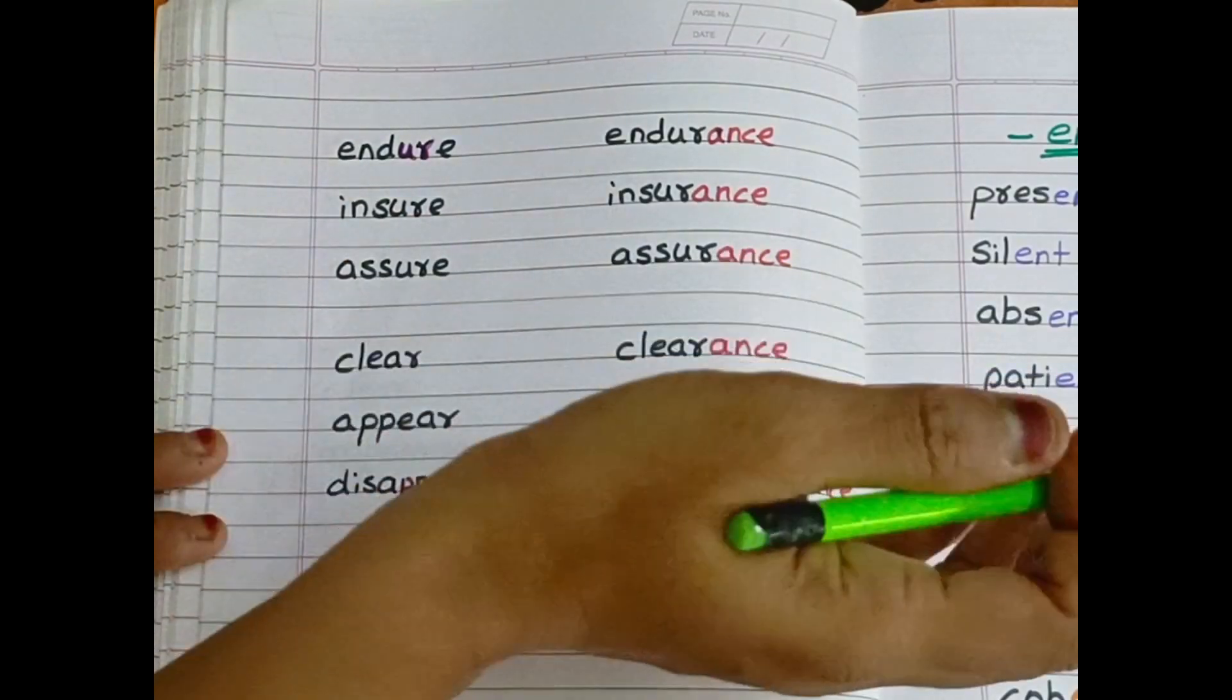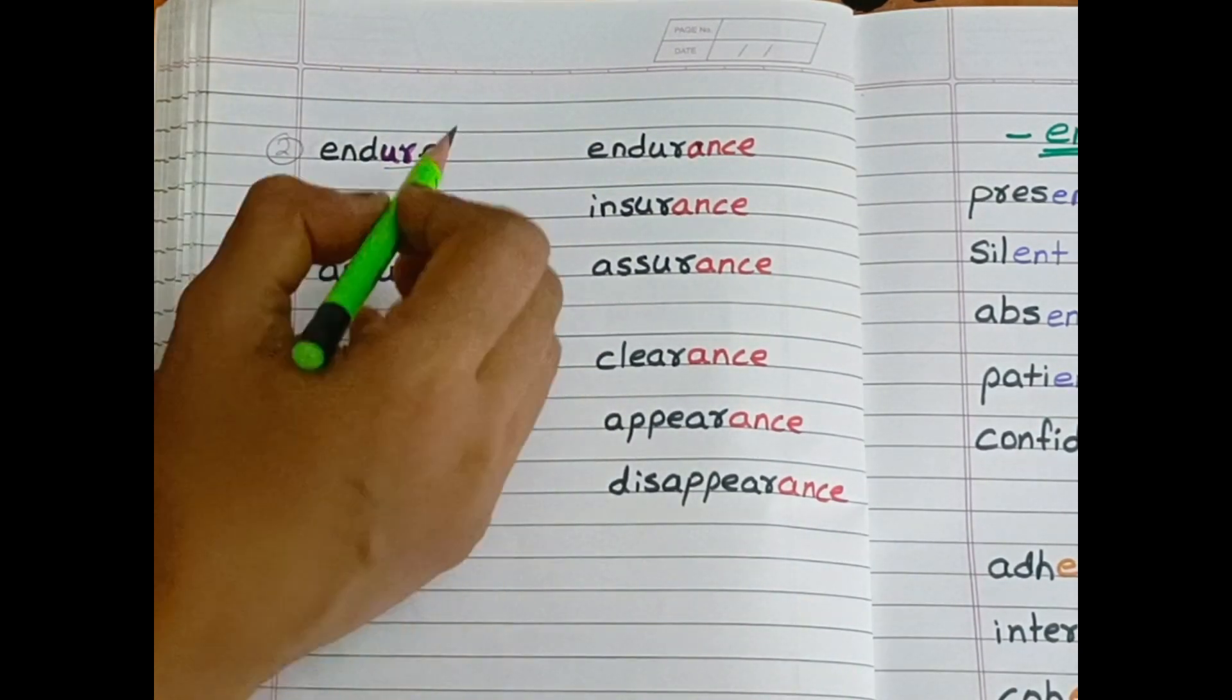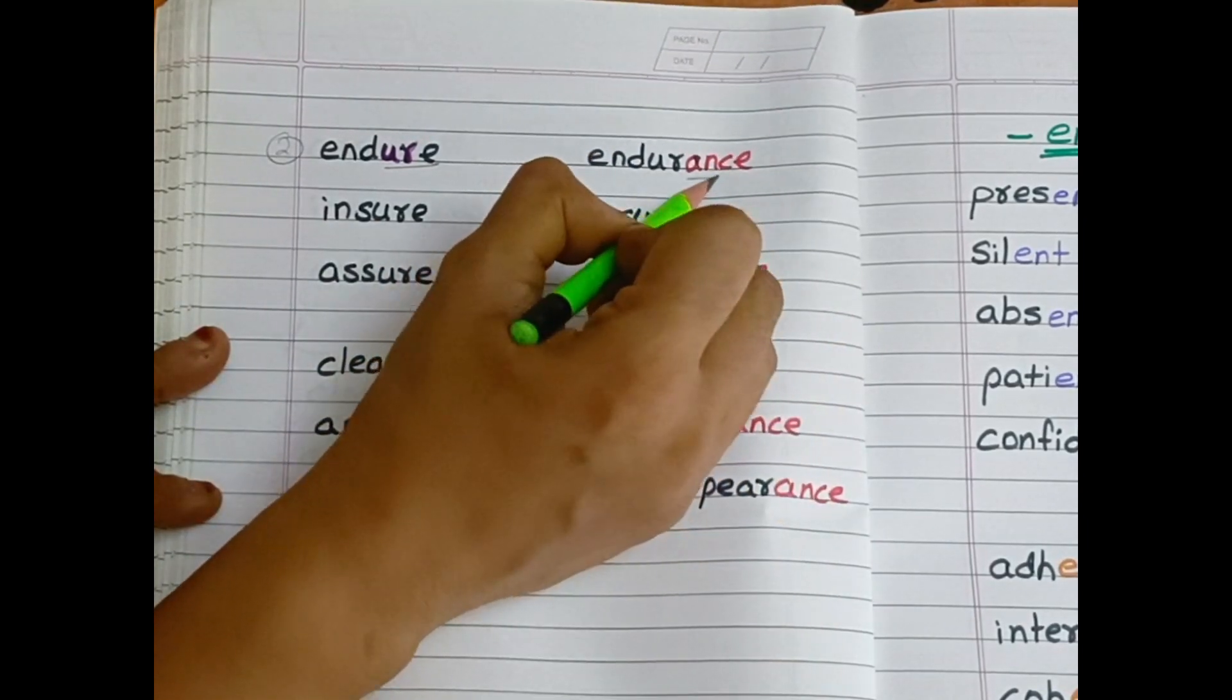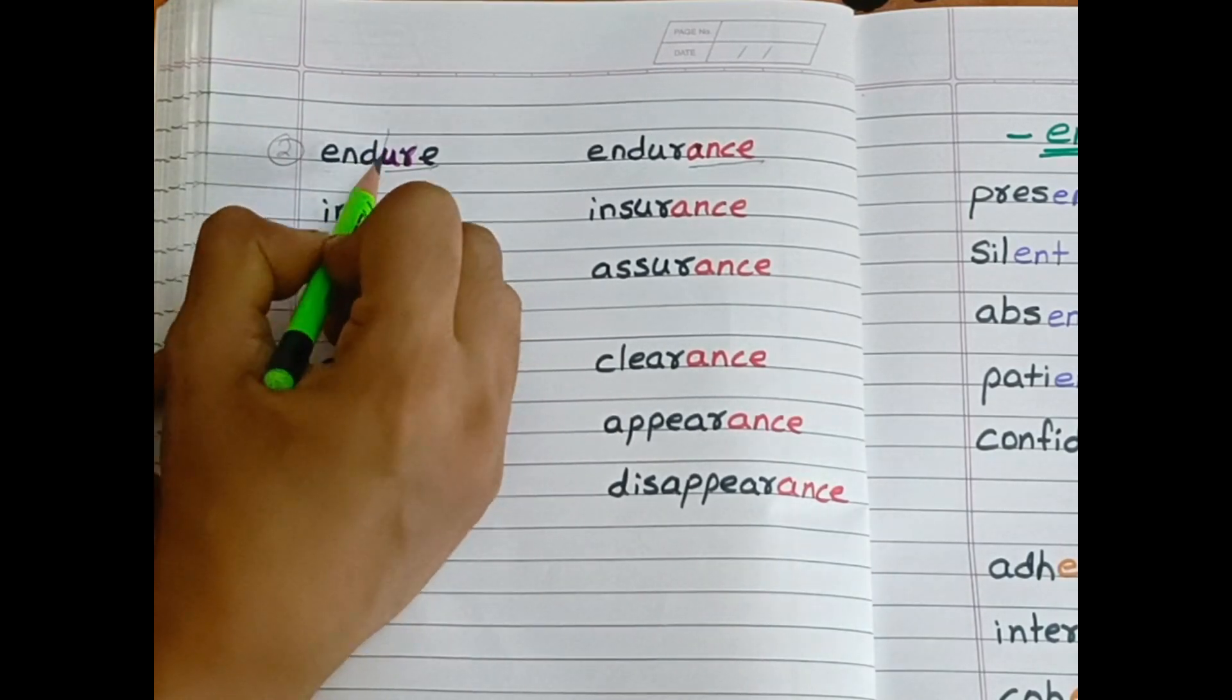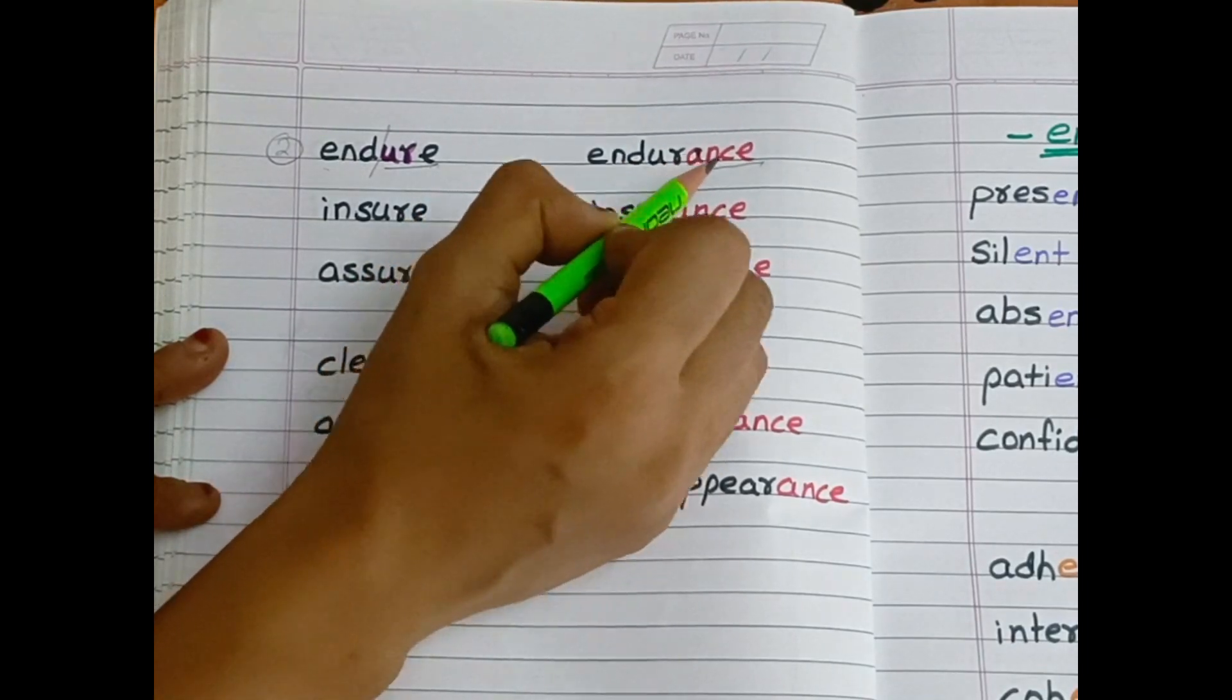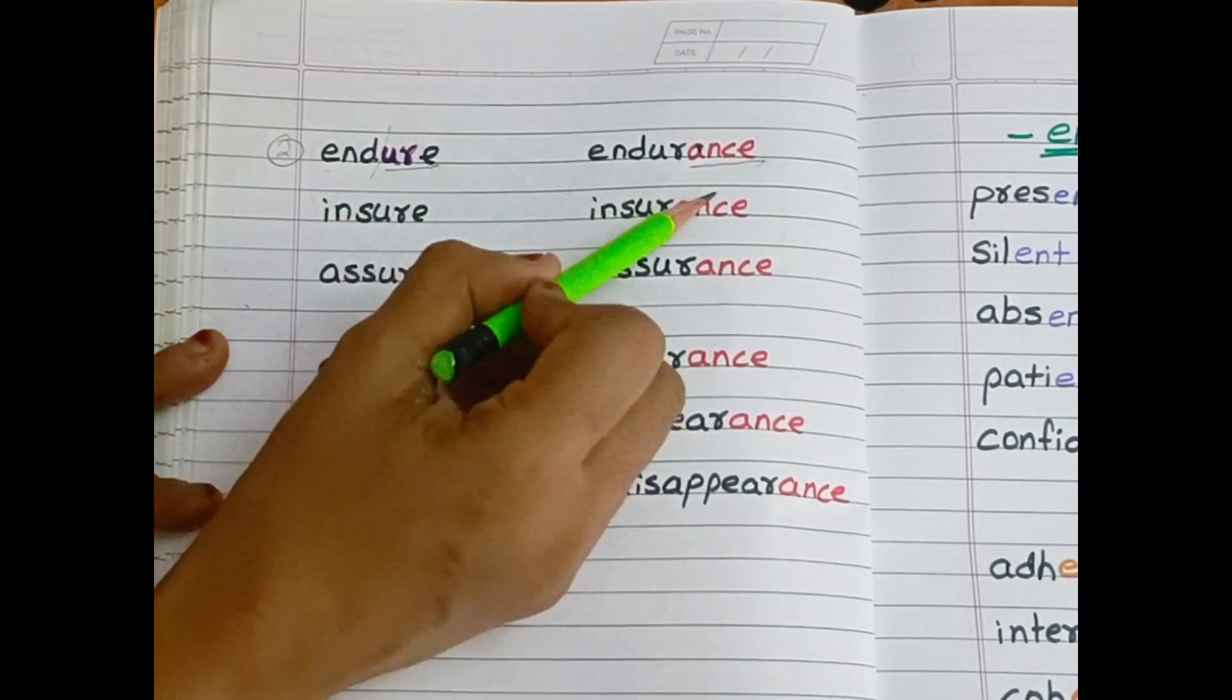And here, the second rule is, if the word ends with u-r-e, substitute u-r-e with a-n-c-e. Example, endure, e-n-d-u-r-e, becomes e-n-d-u-r-a-n-c-e. Endurance.